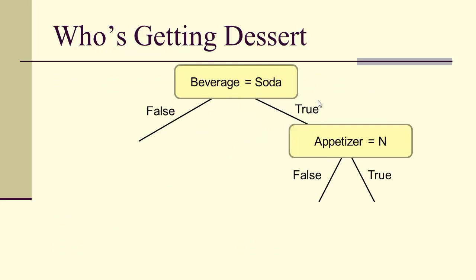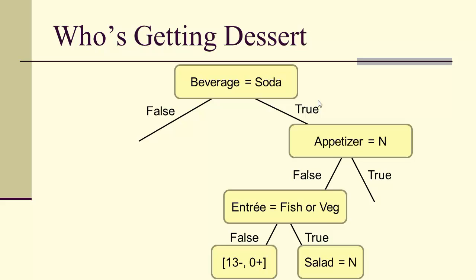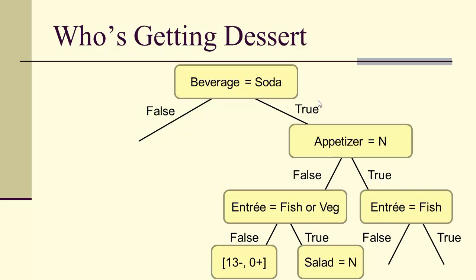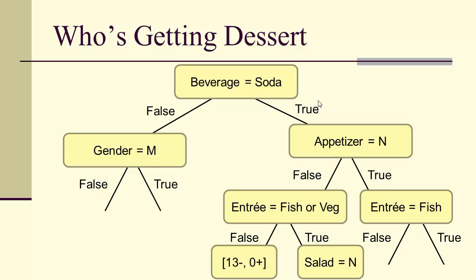When we do so, we find that on the true side the highest information gain comes from the appetizer — did they get an appetizer — then whether the entree was fish or vegetarian, then salad. On the true side, whether the entree was fish. On the false side — if they didn't get soda — the next factor is whether they were male or female.